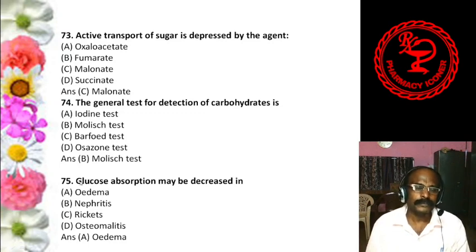Question 55: Alpha-D-glucuronic acid is present in — Hyaluronic acid, Chondroitin sulfate, Heparin, or All of these. The answer is C, heparin — alpha-D-glucuronic acid is present in heparin. Question 56: A carbohydrate commonly known as dextrose is — Dextrin, B-fructose, D-glucose, or Glycogen. The answer is D-glucose. D-glucose is called dextrose.